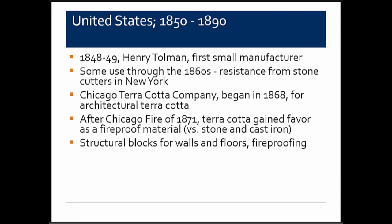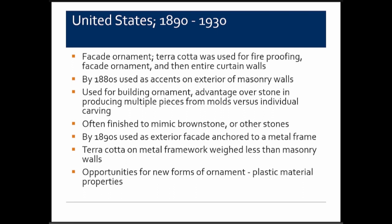Terracotta development in the United States began around the mid-1800s, 1850 to 1890. Early manufacturers were brought in; initially terracotta was a more economical alternative to carved stone. There was some resistance from stone cutters in New York City. In Chicago, use increased significantly after the 1871 fire, where it began to be used as a fireproofing material alongside stone and cast iron, and also in structural applications including walls, floor systems, and clay tile arches.